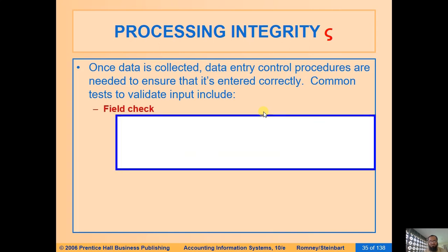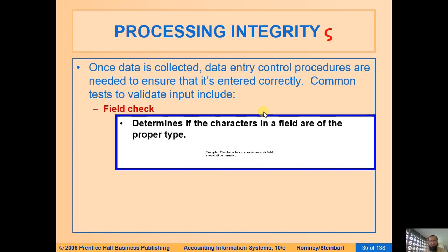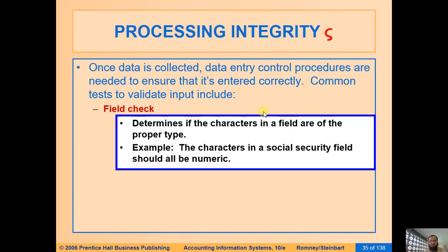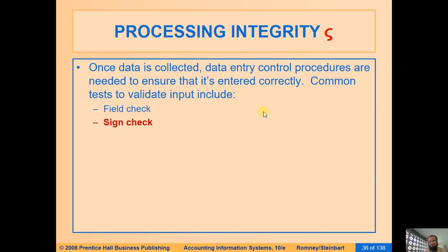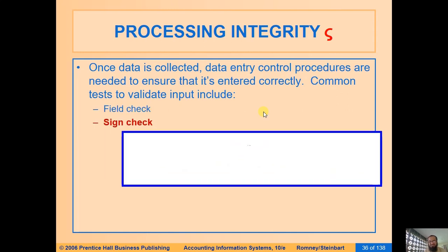If data is entered manually into the system, one of the controls is the field check. The field check works to verify that the appropriate type of data is entered. For example, if it is a CNC number, alphabets should not be entered and the system will automatically invalidate any alphabet entry, popping up an error. Similarly, fields requiring alphabets will reject digits or special characters.